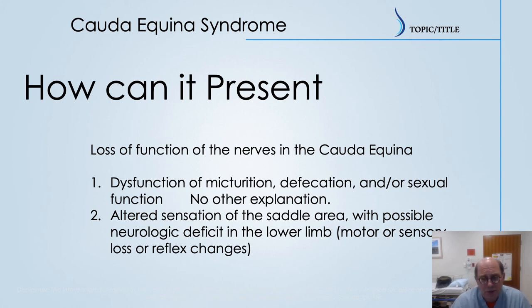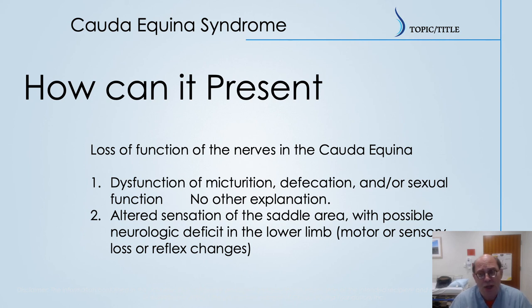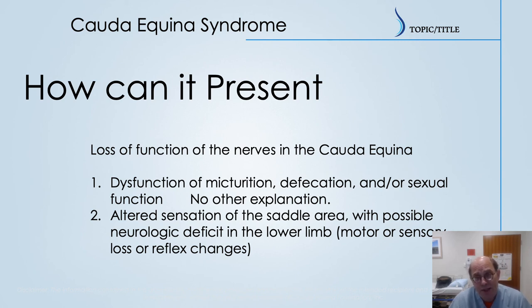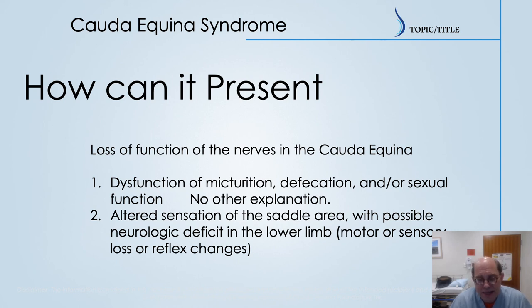This has a lot of autonomic as well as sensory and motor involvement, and there's no other explanation — that's one of the hallmarks of cauda equina. The other key feature is altered sensation: the saddle anesthesia. There may also be weakness or loss of reflexes on neurologic examination. One of the keys is we're going to see this loss of neurologic function in that saddle anesthesia distribution.